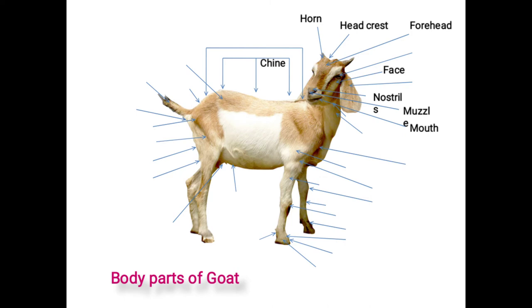Next is the mouth. It is the opening for intake of food and water. It includes the upper jaw, lower jaw, tongue, tip, and dental pad called as the upper jaw.